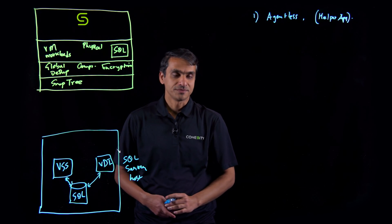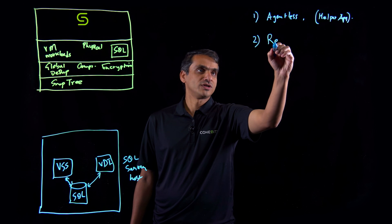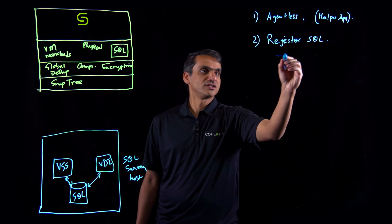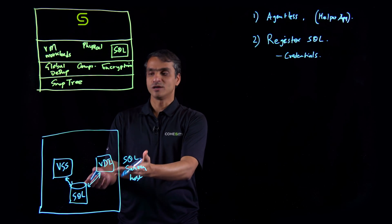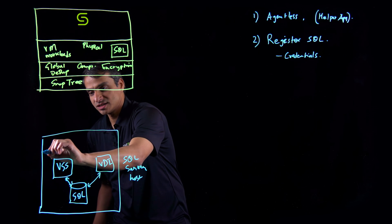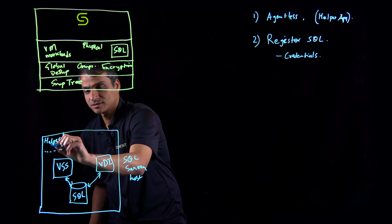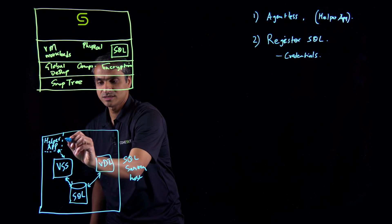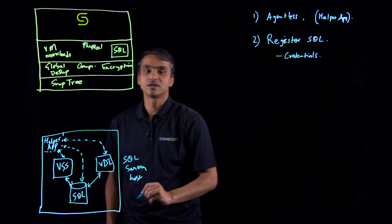To protect the SQL server, the first step is to register it. This involves specifying credentials that are used to load and unload our helper app on the SQL server host. Once we have the right credentials, we load the Cohesity helper app, which then interacts with the VSS service, the VDI service, and with the SQL server directly to fetch metadata.